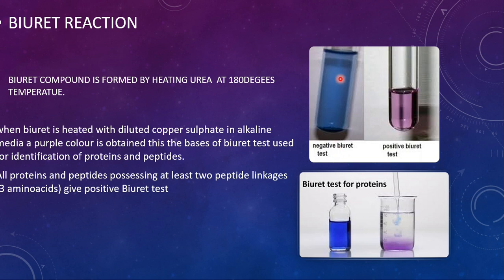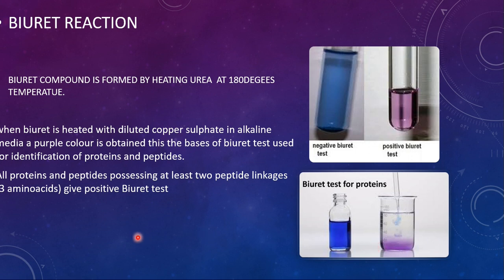In the figure you can see a negative test and a positive test. We take a sample of unknown composition and add the biuret reagent. On heating, if you get the purple color that indicates a biuret-positive result, meaning proteins are present in that sample. If you get the usual color of biuret reagent, that is a negative test. All proteins and peptides possessing at least two peptide linkages give a positive biuret test, and they must have a minimum of 3 amino acids.